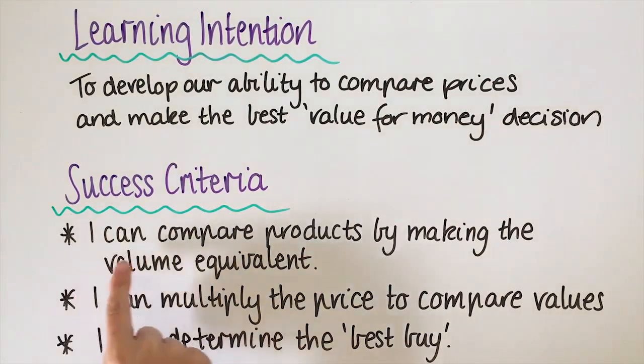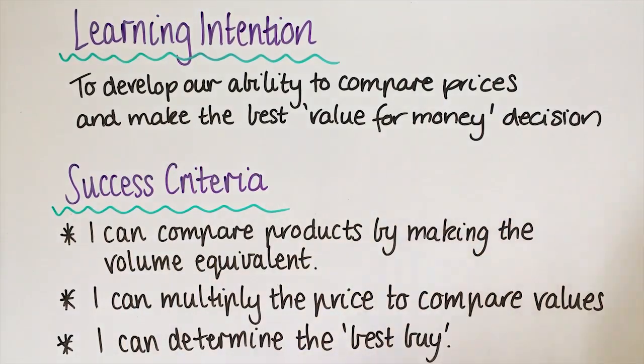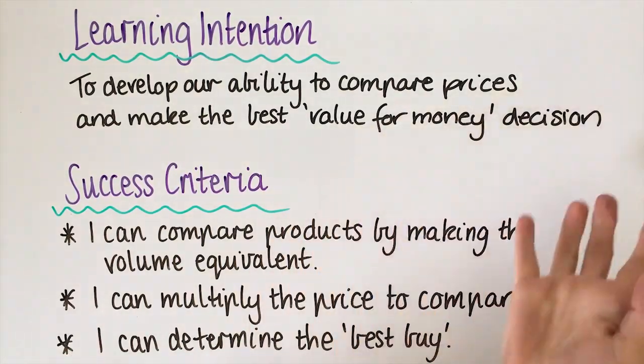You need to be able to compare products by making the volume equivalent. So 10 tea bags and 50 tea bags, that's not equivalent. We need to make them the same so we can compare it. Then you need to multiply the price to make it easier to compare, and then determine which is the better buy.